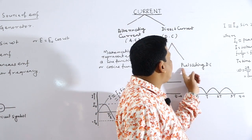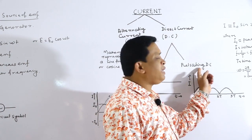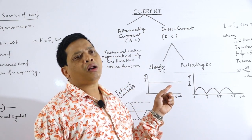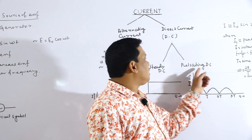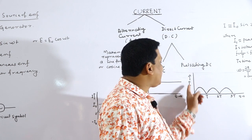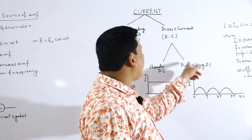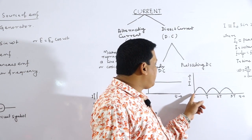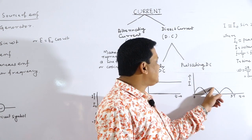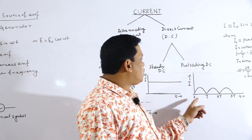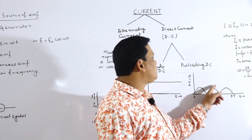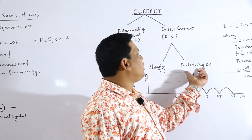Another type of DC is pulsating DC. Pulsating means fluctuating or varying. Looking at this graph with time along the x-axis and current along the y-axis, the graph first increases, takes a maximum value, then decreases, again increases, decreases like this. The current is changing with time, therefore this is called pulsating DC.